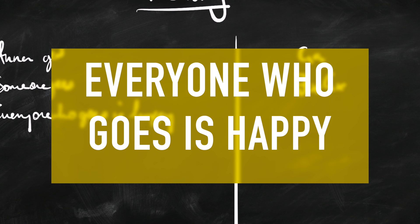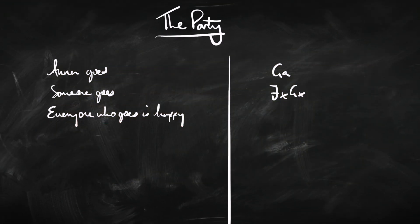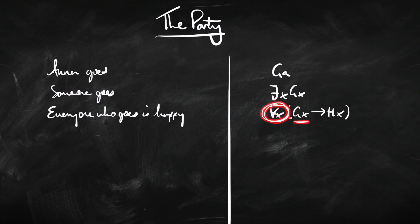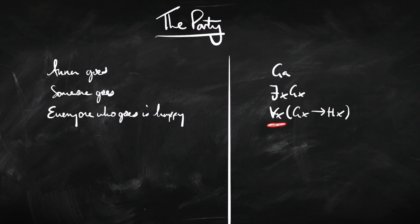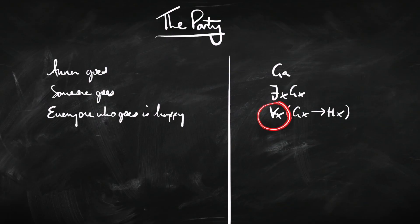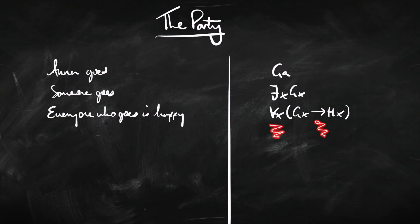Getting a bit more complex: 'Everyone who goes to the party is happy.' This is a quantified sentence and we express it with an if-then: for everyone X, if X goes to the party, then X is happy. This combination — the universal quantifier 'for all X' plus the implication 'if-then' — these two go really well together. It's a way of saying for absolutely everyone going to the party, those people are happy. We capture that using the combination of 'for all' and 'if-then.'